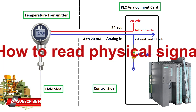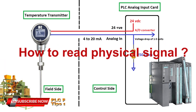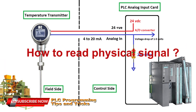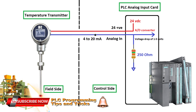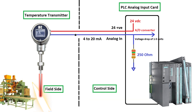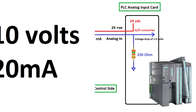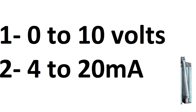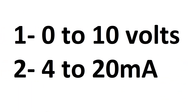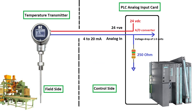How to read a physical signal: a physical signal such as temperature is converted to an electrical signal so that a processor can understand it. The most common signals are 0 to 10 volts and 4 to 20 milliamps. PLCs use analog to digital converters (ADC) to convert voltage signals to digital numbers which are understandable by the CPU.